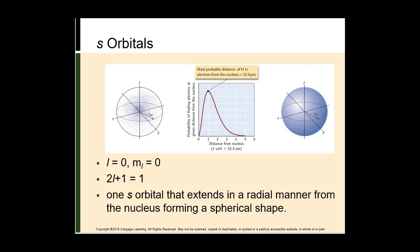Let's get into the shapes of orbitals. S orbitals are spherical in shape. Looking at hydrogen 1S, this dot picture shows each dot representing the position of an electron at a different instance in time — the dots are most dense closest to the nucleus. The plot for surface density as a function of distance shows the probability of finding the electron at a given distance from the nucleus is greatest close to the nucleus and decreases further away.